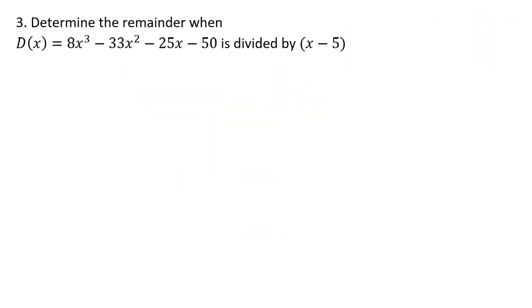Problem 3: determine the remainder when this polynomial is divided by x minus 5. So this time they're asking us to figure out what the remainder is. Since this is a linear factor — we're dividing by x to the first power — we can use synthetic division. Or you can use long division like you did in problem 2. I'm going to show an example of synthetic division so you can see both ways of doing division.